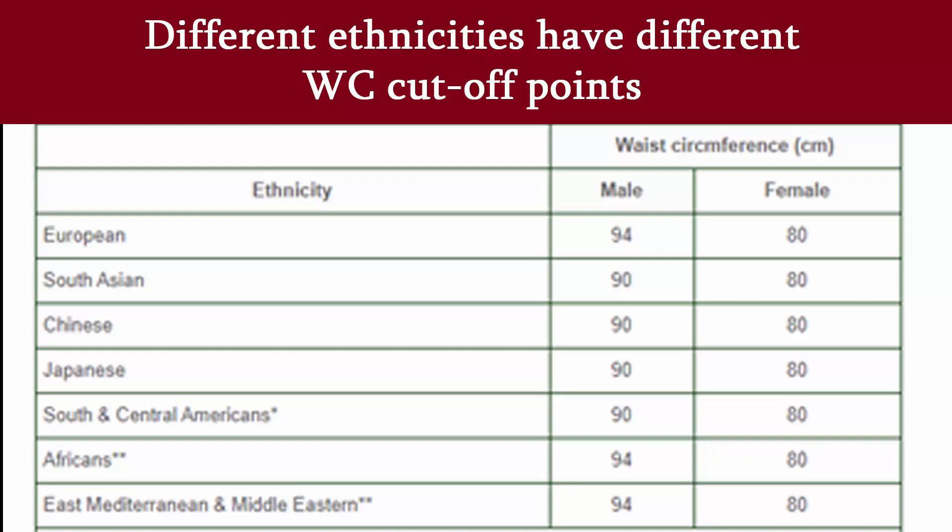As a general guide, increased obesity-related health risks are associated with a waist circumference greater than or equal to 94 cm in men and 80 cm in women. If a man has a waist circumference greater than 102 cm, he is at a substantially increased risk. A waist circumference greater than 102 cm for men and 110 cm for women puts these individuals at extremely high danger for obesity-related health issues.